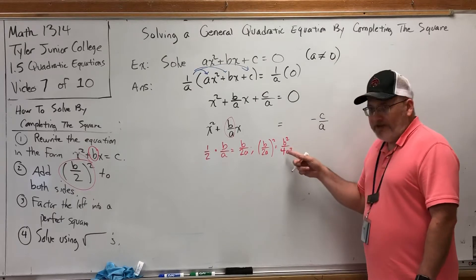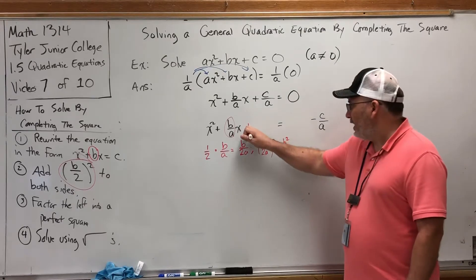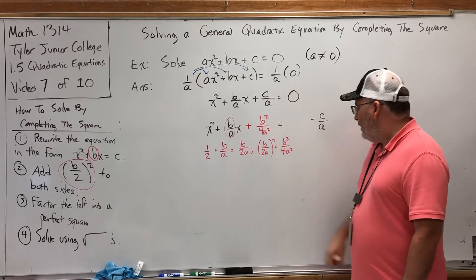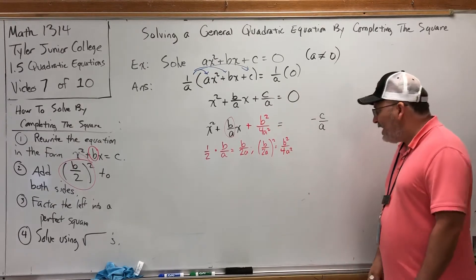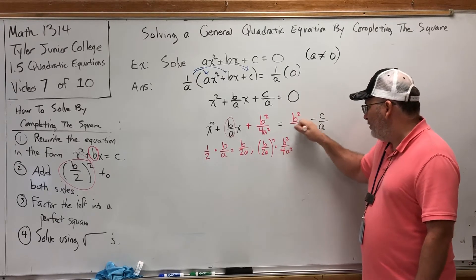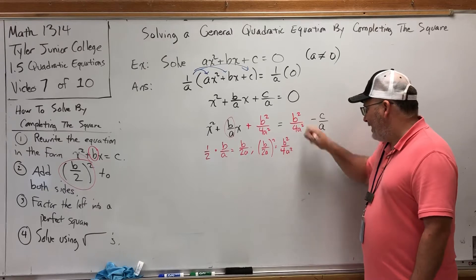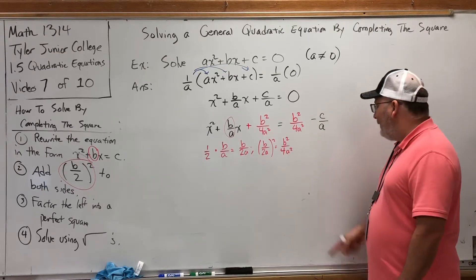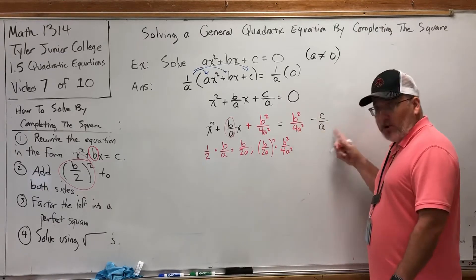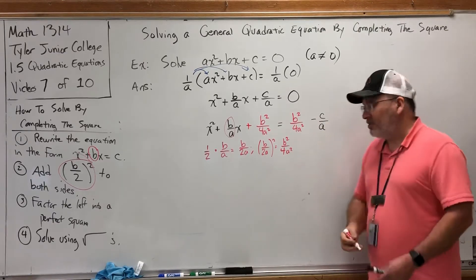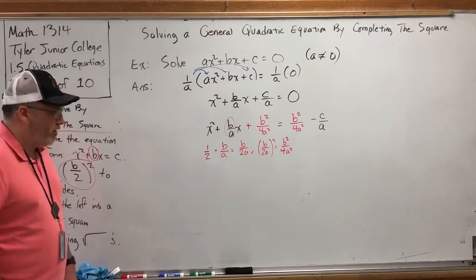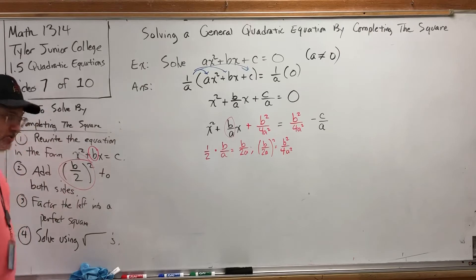So we'll add b squared over 4a squared on the left. And we'll also add it on the right side — I'm going to put it in front of the minus sign because I wanted the right side to look like a subtraction problem. So we have b squared over 4a squared minus c over a. That's the move that completes the square. As messed up as it looks, it's correct.